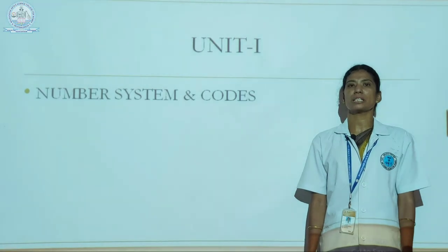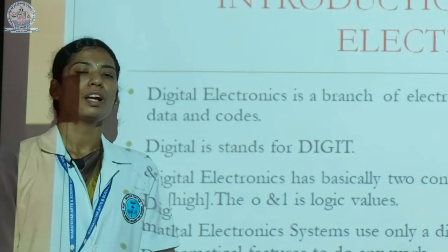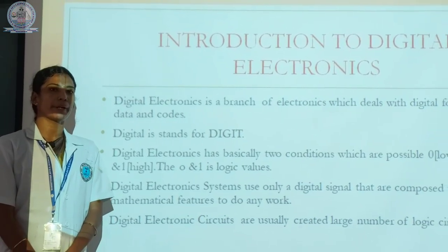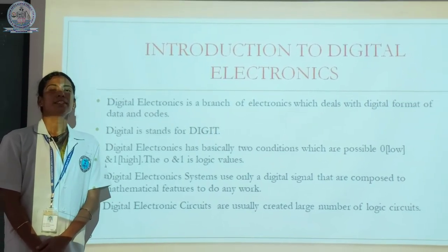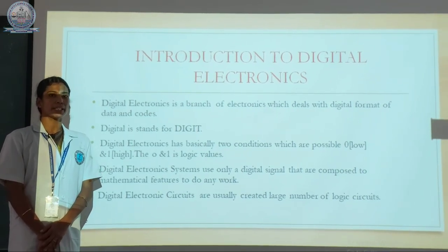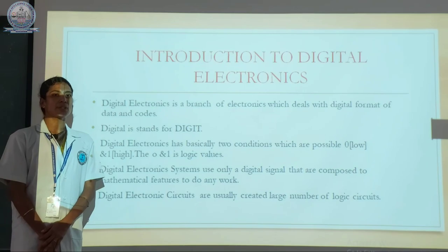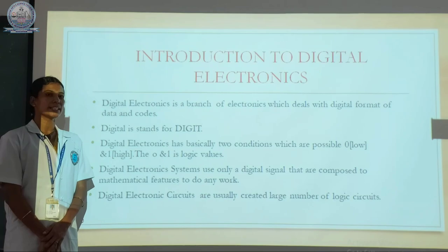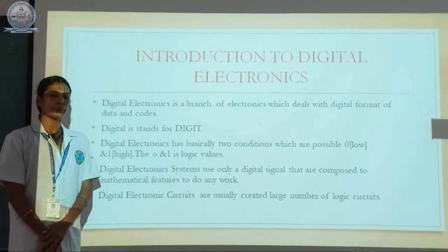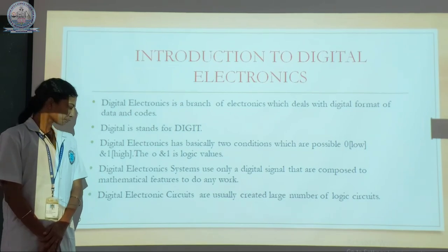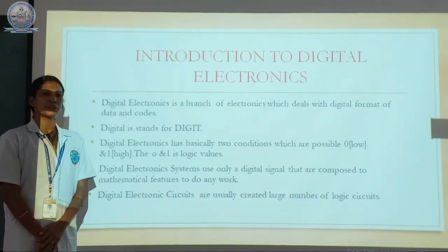What is meant by digital electronics? Digital electronics is a branch of electronics which deals with digital format of data and codes. Digital stands for digit. Digital electronics has basically two conditions — the values of zero and one. Digital electronic systems use only digital signals that are composed into mathematical features to do any work. Digital electronic circuits usually create a large number of logic circuits.